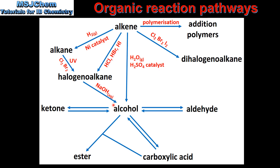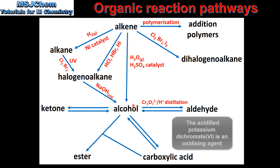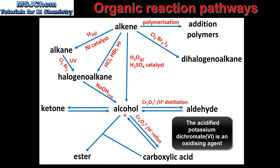Next we look at the oxidation reactions of the alcohols. A primary alcohol can be oxidized using acidified potassium dichromate and distillation to form an aldehyde. A primary alcohol can also be oxidized to a carboxylic acid using acidified potassium dichromate and reflux.